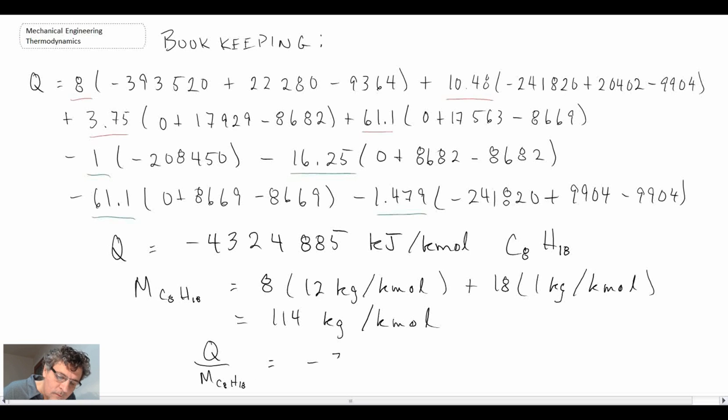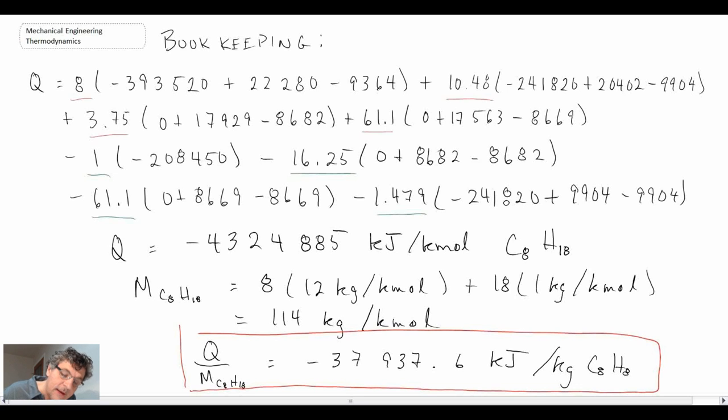That's the final answer that we obtain: negative 37,937.4 kJ per kg C8H18. You can see it's negative, implying that the heat is leaving our system, which we would expect for an exothermic reaction like combustion of octane gas. So that concludes the example problem of applying the first law to a system with reaction.